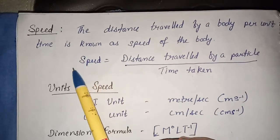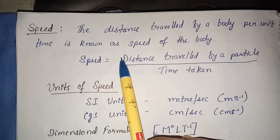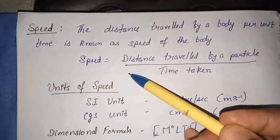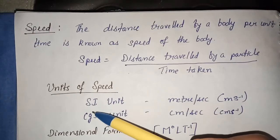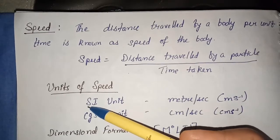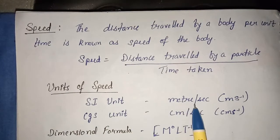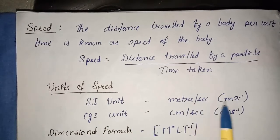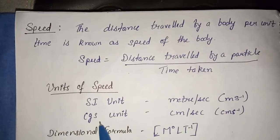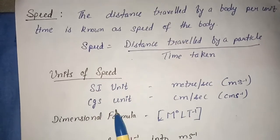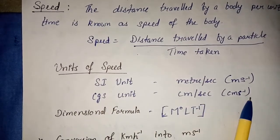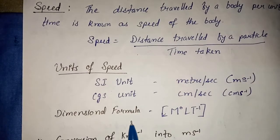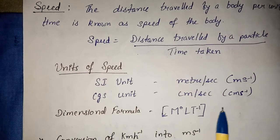Now, when we measure the speed, which units can we use? We know different systems. In SI system, the unit is meter per second. And in CGS system, the unit is centimeter per second. Dimensional formula is M0LT-1.